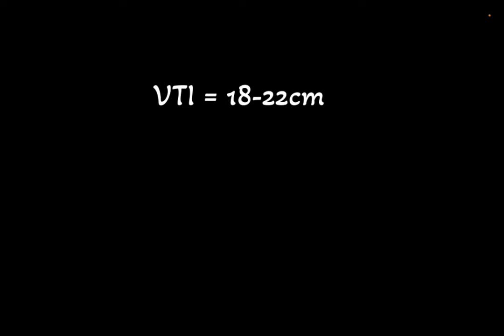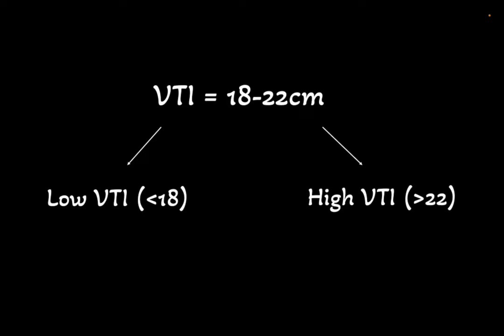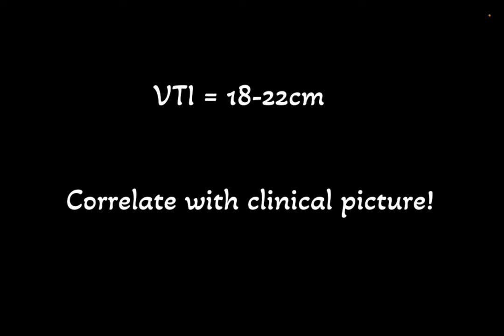Recall that a normal VTI is between 18 to 22. Thus we define a low VTI as less than 18 and a high VTI as more than 22. However, you may come across slightly different numbers in the literature — some texts define normal as between 16 to 20 while others use 18 as an absolute cutoff. Whatever numbers you decide to use, it is important to correlate the value to the clinical picture. For instance, if after resuscitation your patient has a normal mental status, normal lactate, is producing urine, and has a normal capillary refill but their VTI is 16, you should think twice before acting on this.